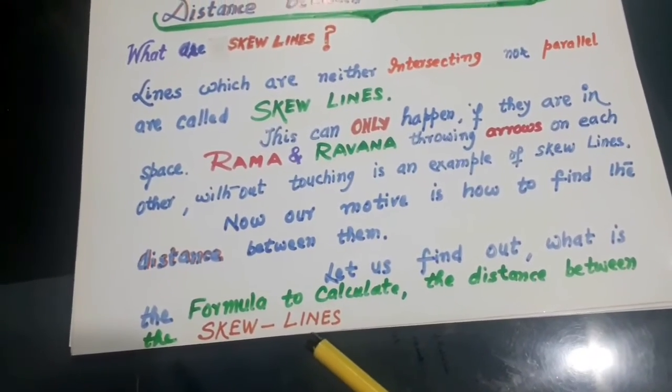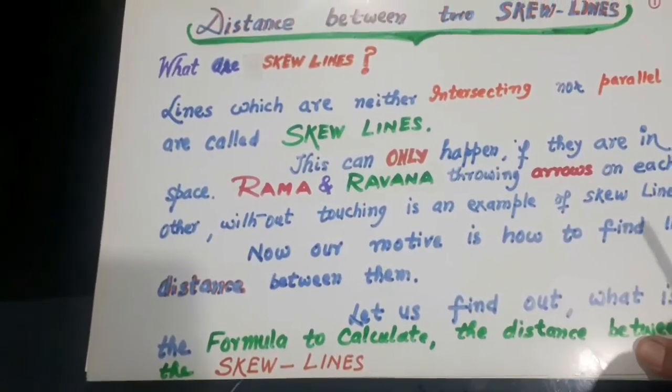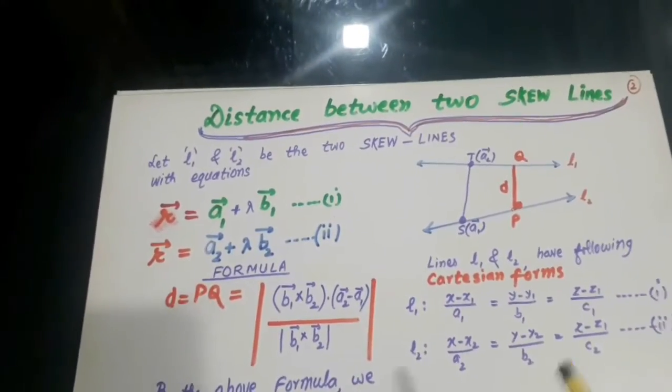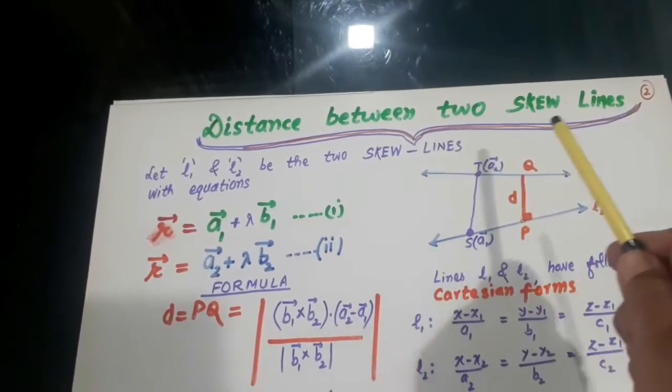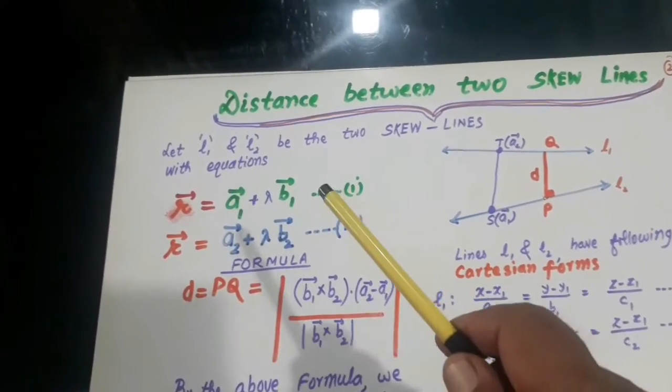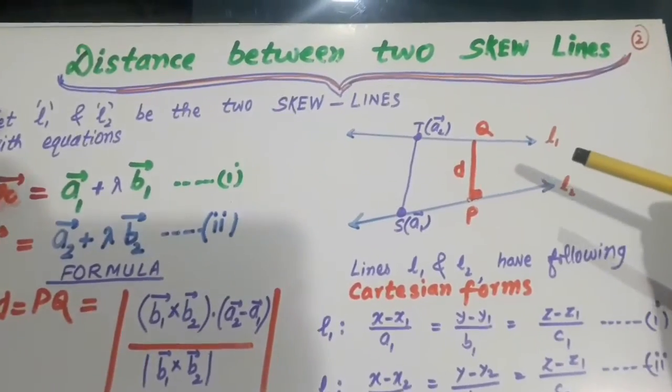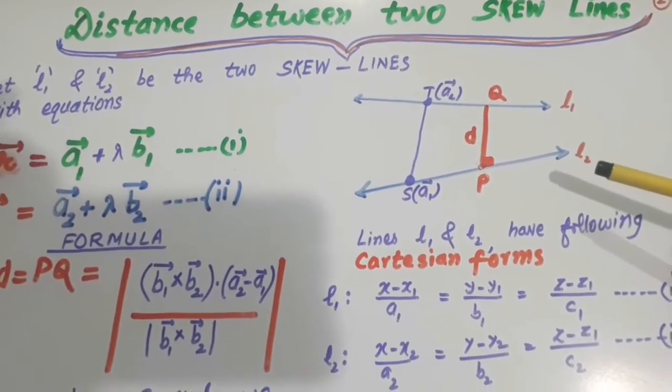Here I come with my notes on this. Distance between two skew lines. Let L1 and L2, this is L1 and this is L2. These are two skew lines.